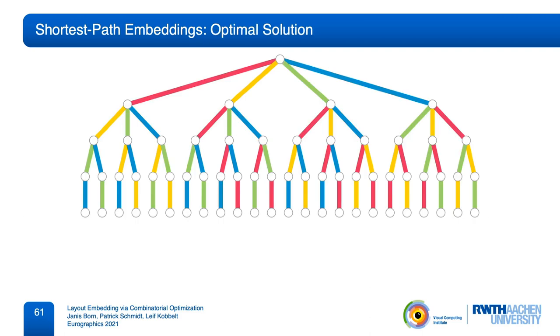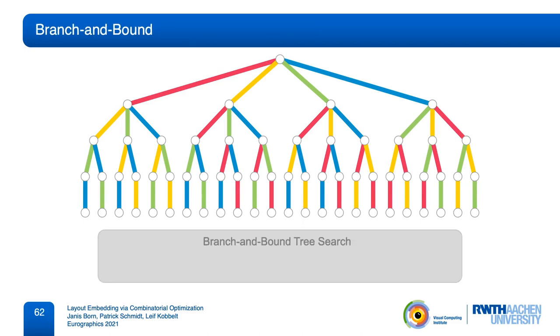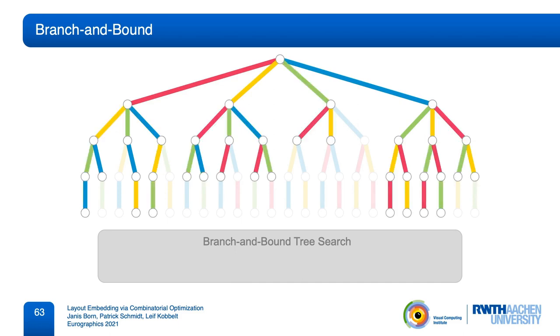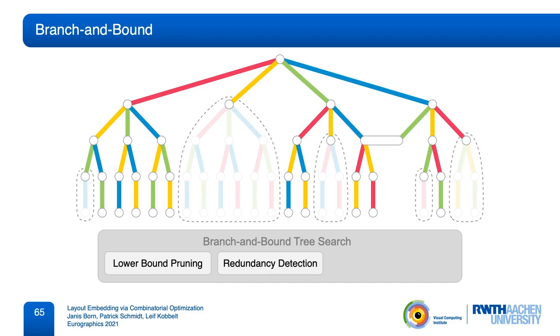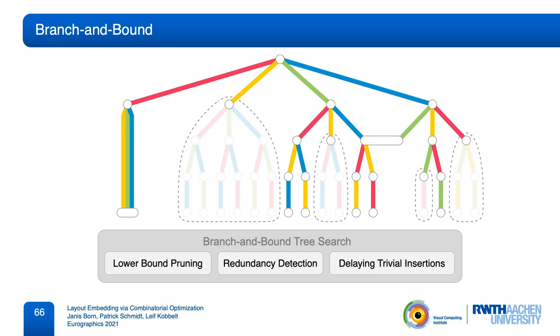Instead of relying on a sequence of local greedy decisions, we propose an approach that reliably finds the best solution by systematically searching this tree. Despite the size, we show that this can be done efficiently by a specialized branch-and-bound strategy with the help of some domain knowledge. Our branch-and-bound algorithm crawls the decision tree starting from the root and explores different partial embeddings. To deal with the large branching degree, we apply a combination of techniques that cut down the tree to a manageable size. We will take a look at the following components: pruning based on lower bounds, the detection of identical states in different branches, and the handling of trivial edge insertions that have no ordering requirements.